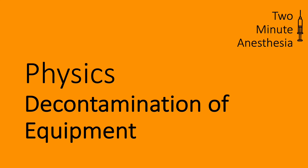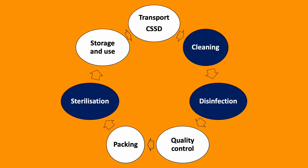Two-minute anaesthesia: decontamination of equipment. Anaesthetic equipment is an important vector for transmission of disease, therefore precautions should be put in place to prevent transmission between patients and between patients and healthcare staff. This is an example of a service cycle for anaesthetic equipment.